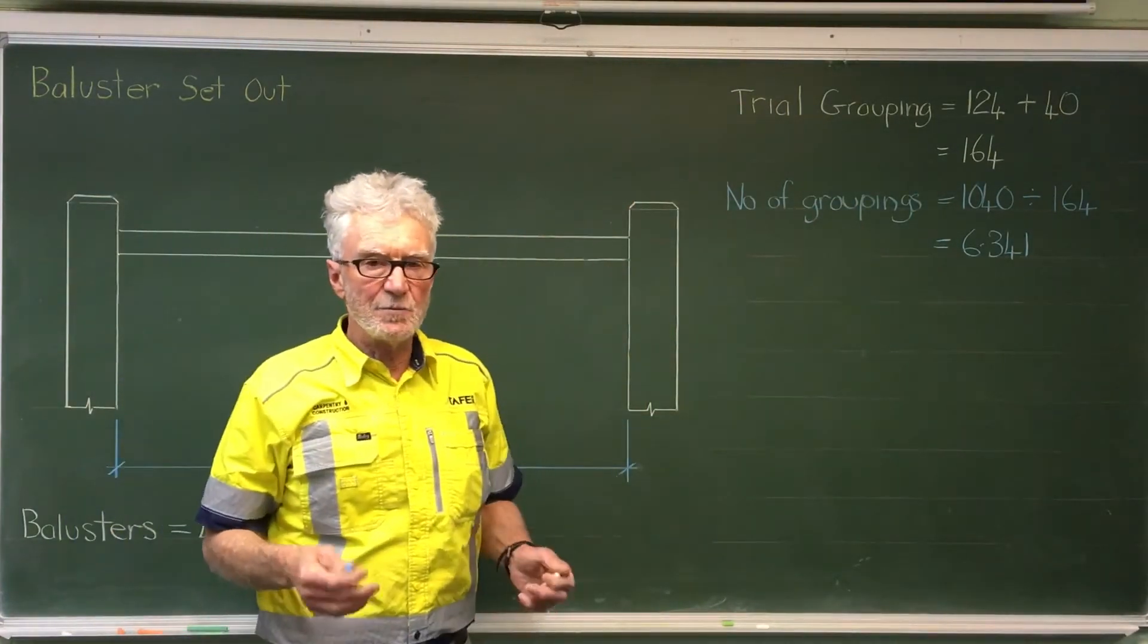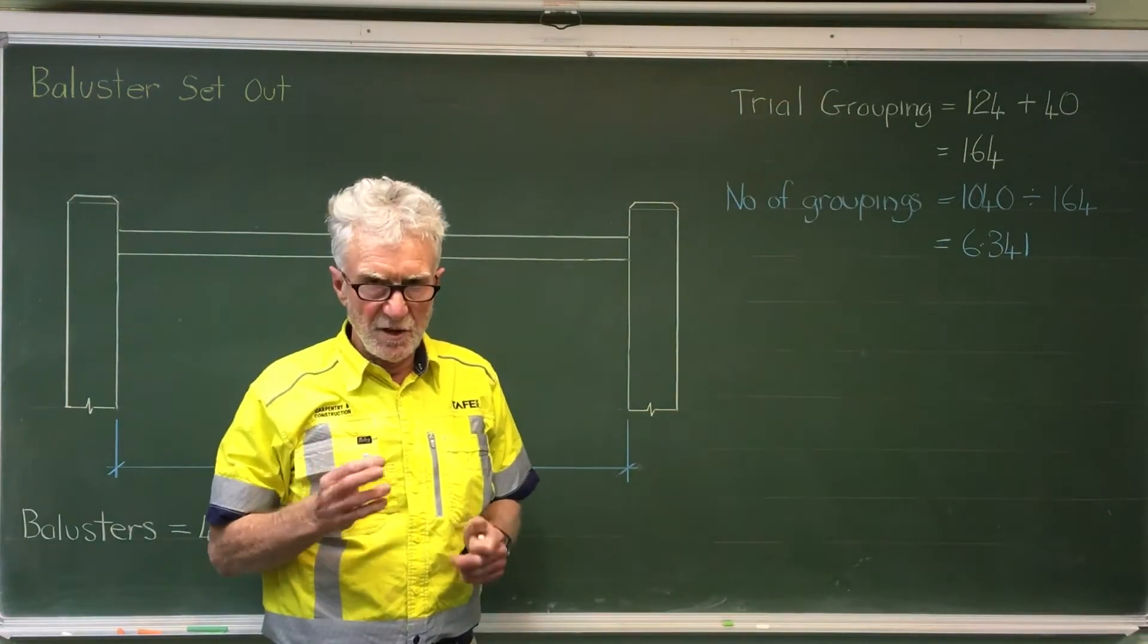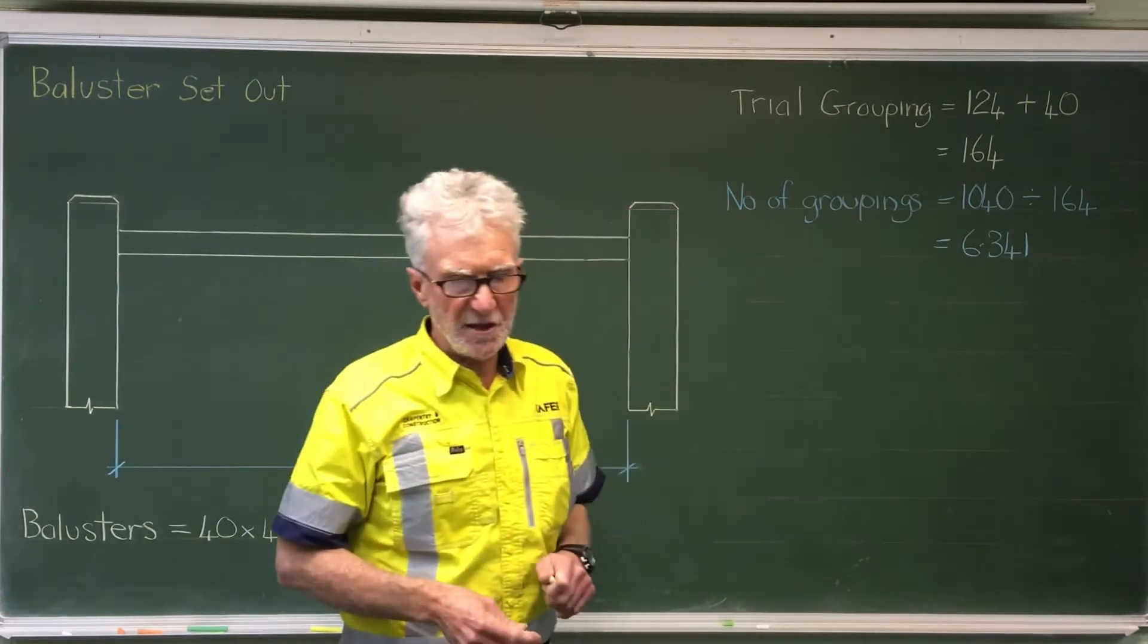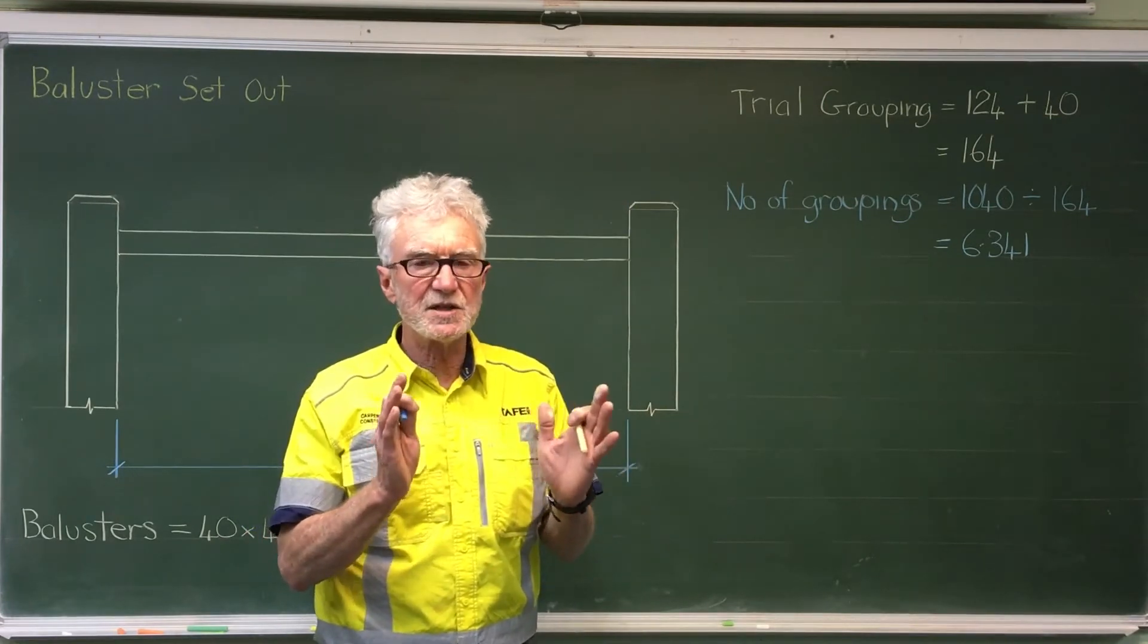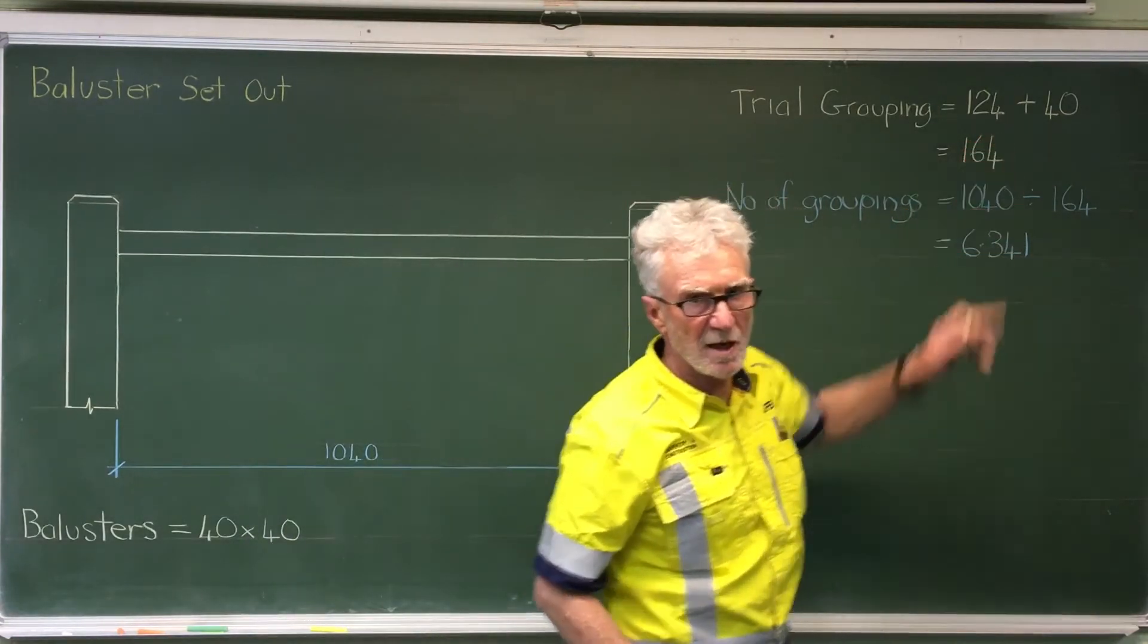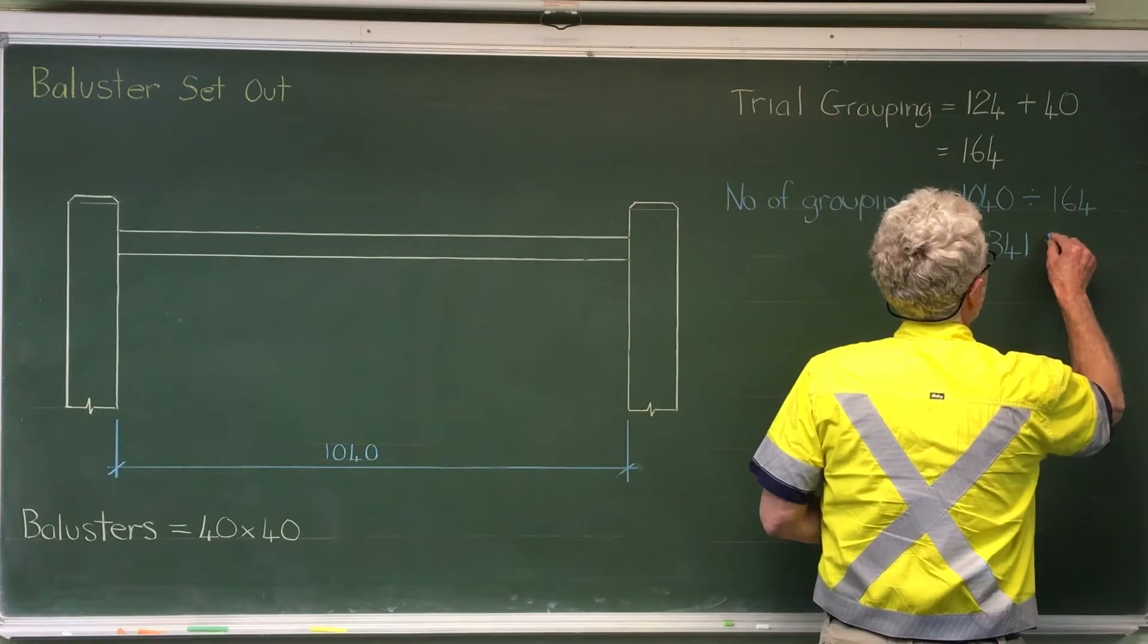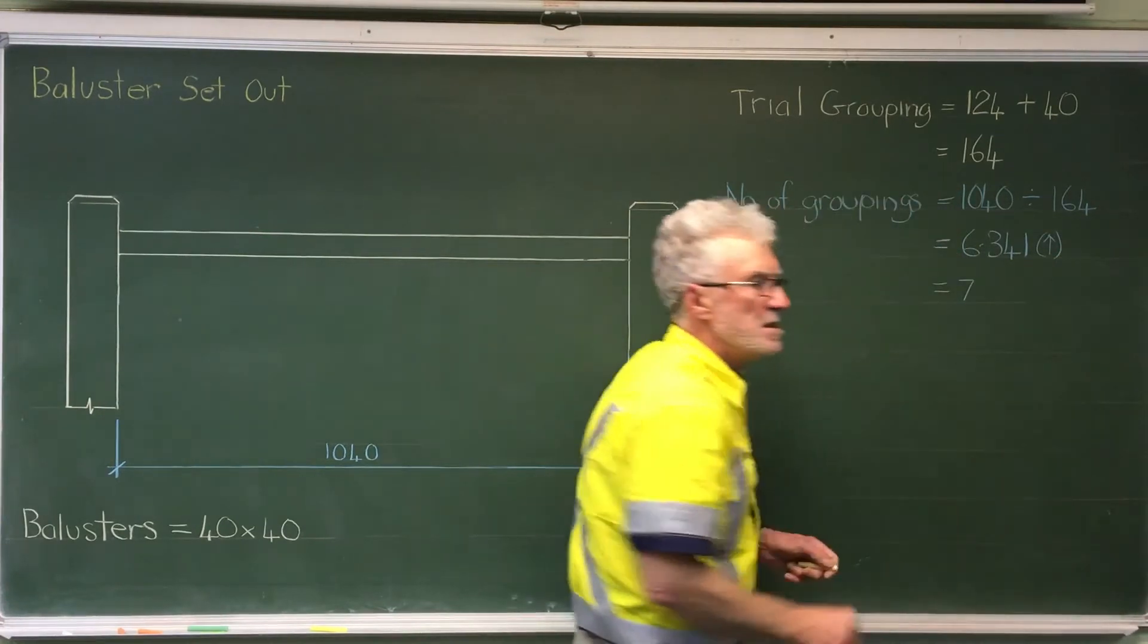Now obviously I can't have part of a grouping. I have to have a full number. And for these calculations we always have to round up. Even though that's closer to 6, if I rounded down to 6, I'd have less groupings. But that would cause the balusters to spread out further and I would exceed this 124 millimetre spacing. So we have to go up and that takes us to 7 groupings.